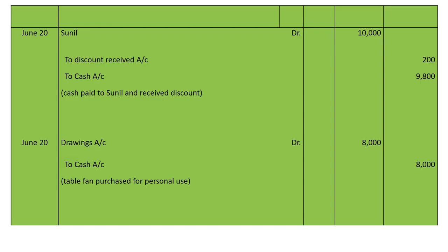June 20, same date: bought a table fan for rupees 8,000 for the domestic use of Ragunath. Whenever we take money or goods from the business for personal use, that is treated as drawings. So we debit Drawings account with rupees 8,000 and credit Cash account. Narration: table fan purchased for personal use.